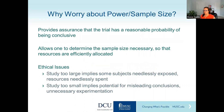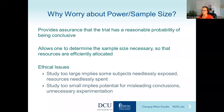So why do we worry about power and sample size? As I'm sure you've heard in the small groups, there's a lot of thought put into how many subjects are needed and whether you can really answer the question in whatever phase of research you're in. From a theoretical standpoint, we worry about power and sample size because we want to have some level of assurance that the trial has a reasonable probability of being conclusive — meaning we can determine the exact sample size so we're not expending any more resources than are necessary.